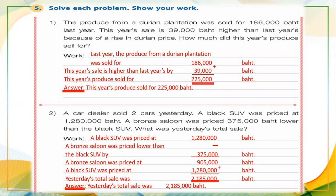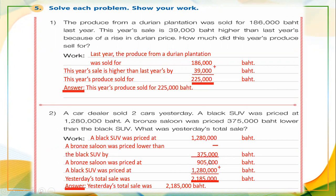The car dealer sold two cars — one for one million two hundred eighty thousand baht, and the second car is priced less than the SUV by three hundred seventy-five thousand baht. So we subtract three hundred seventy-five thousand from one million two hundred eighty thousand to find the price of the bronze saloon, which is nine hundred five thousand baht.